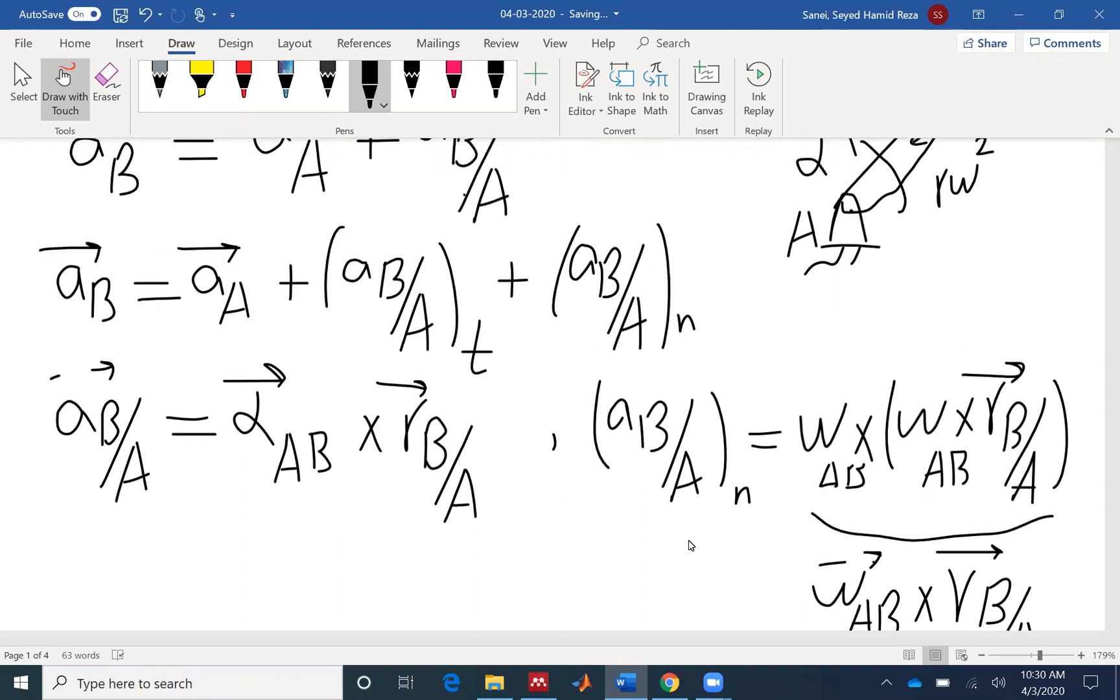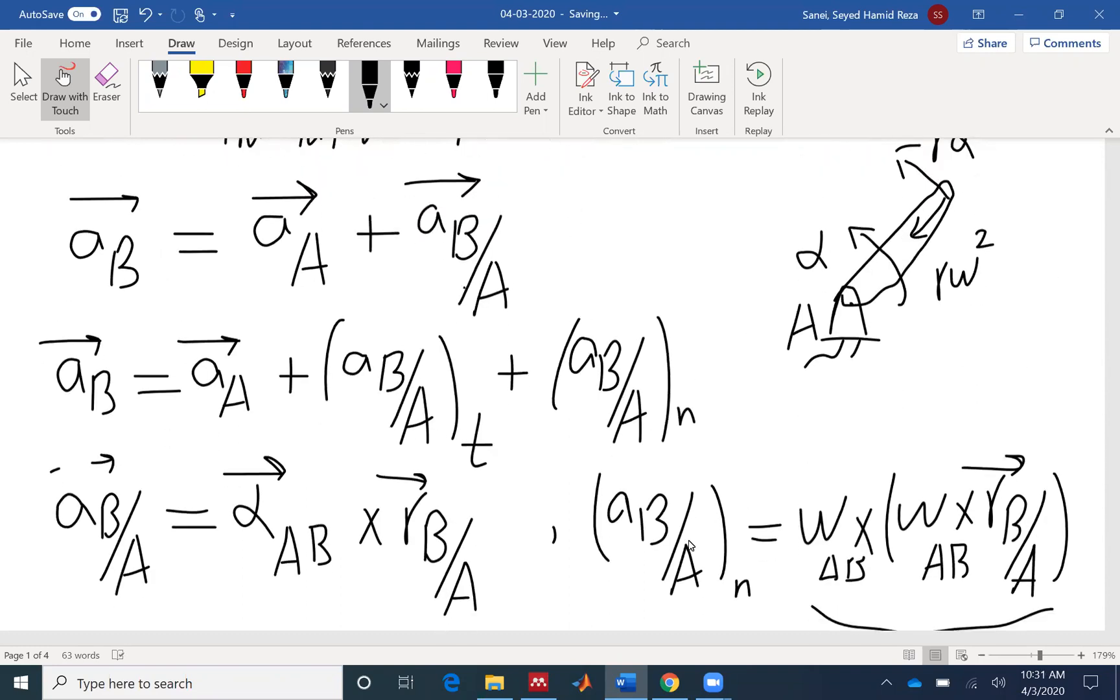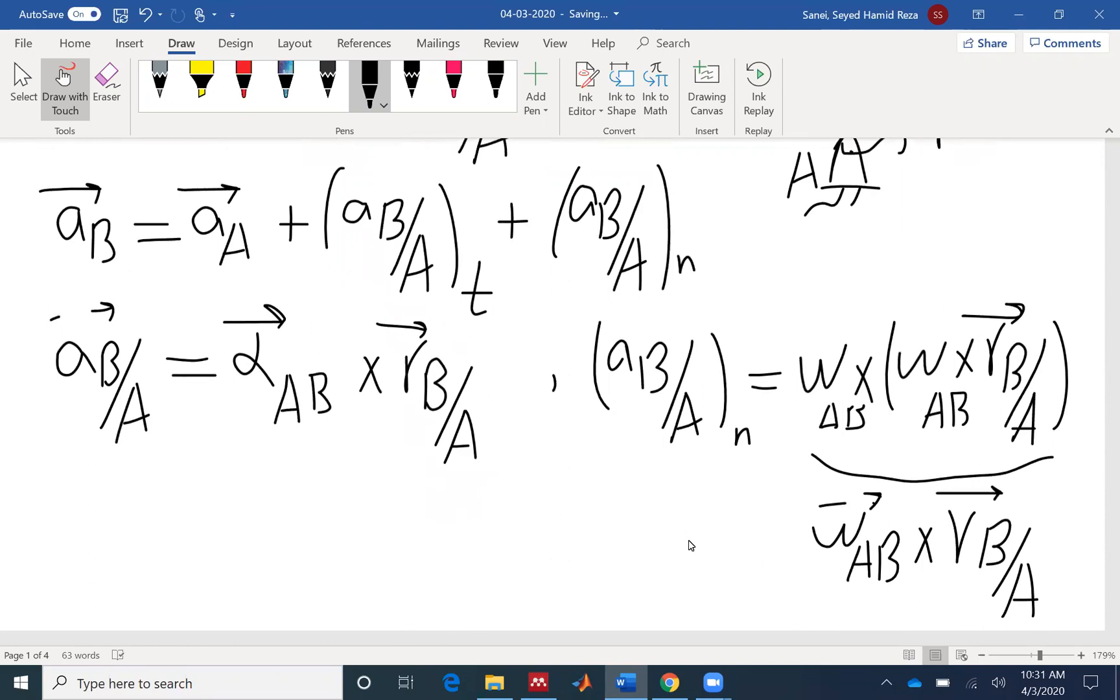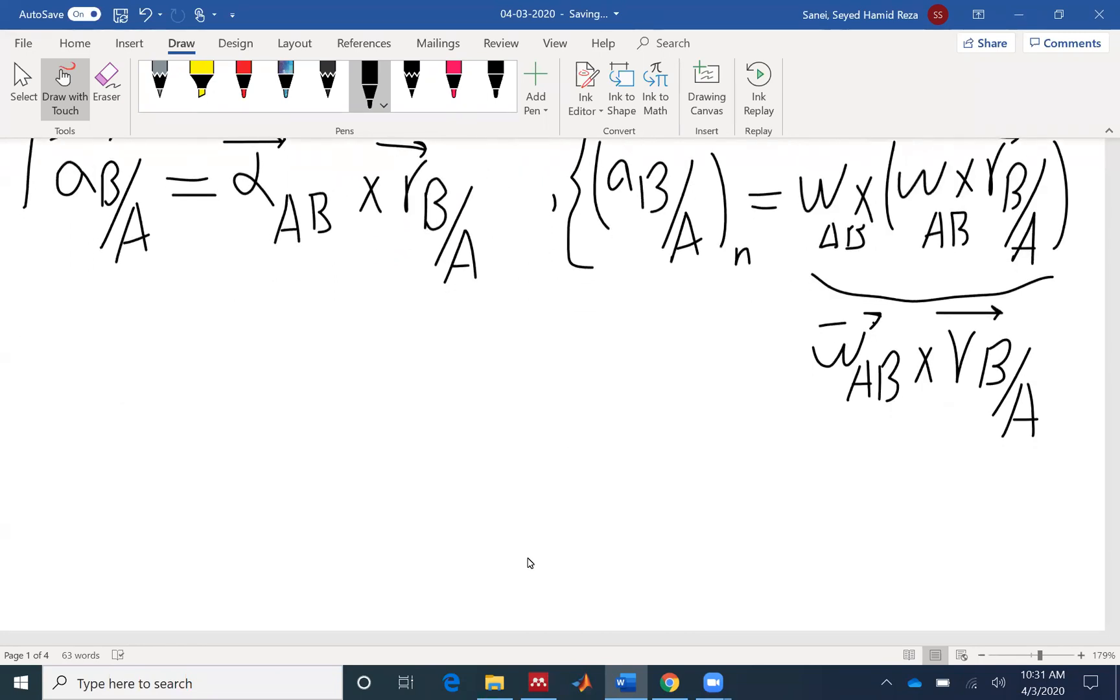So acceleration has two components. These are the vector formulations for acceleration here and this component. Also, we can use the scalar equation. Scalar, as the name suggests, we can only get the magnitude for R alpha.